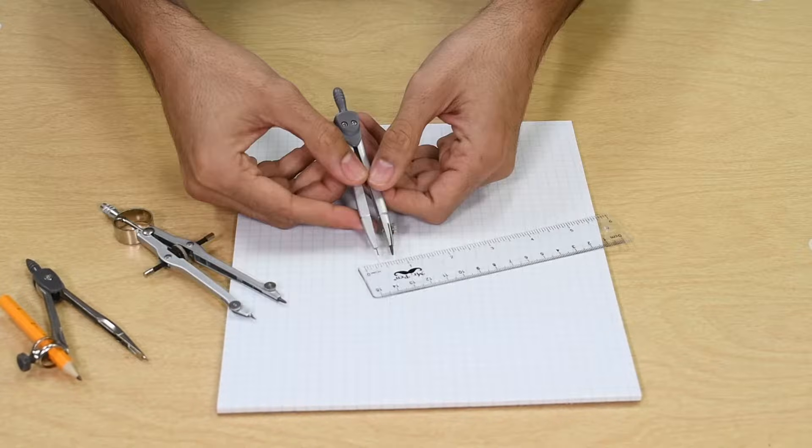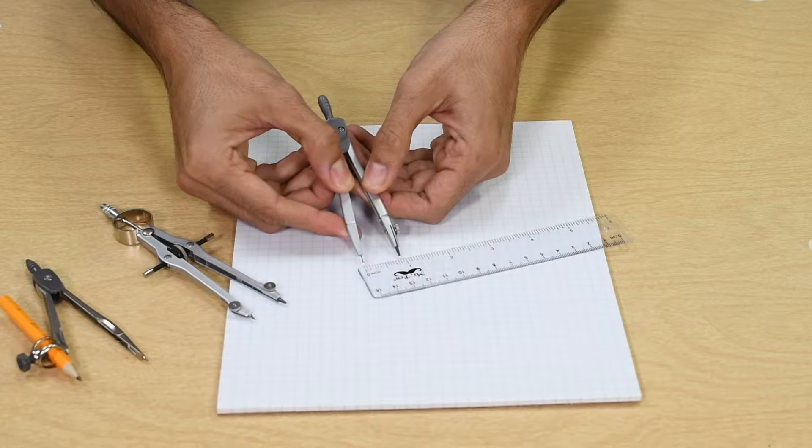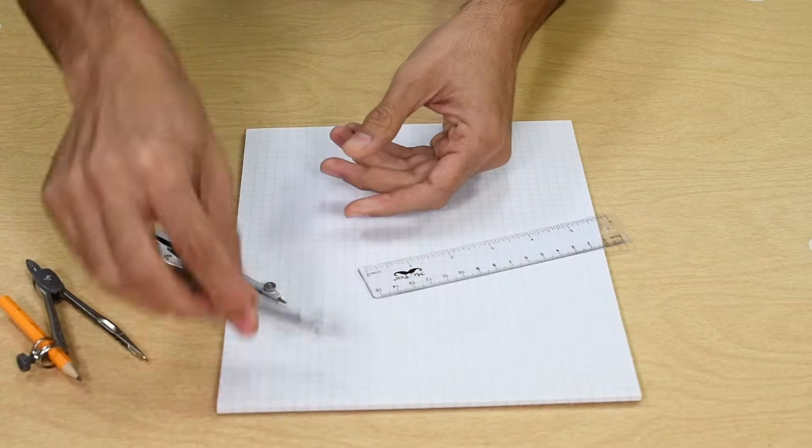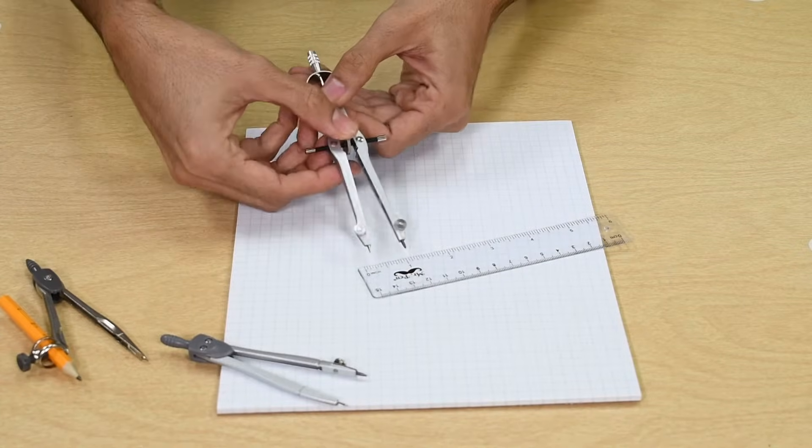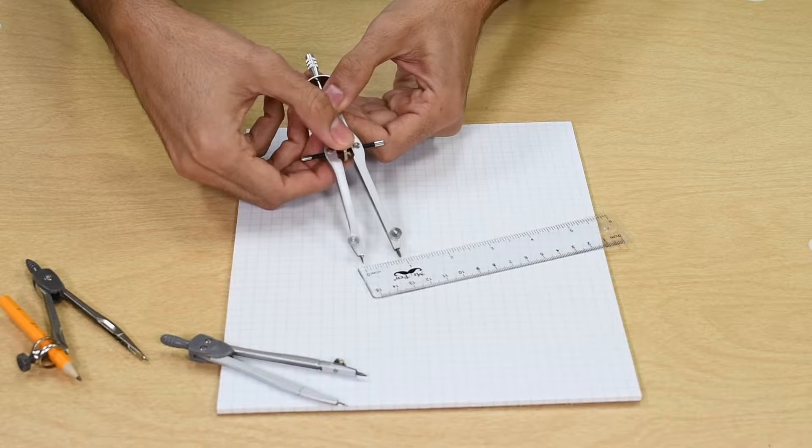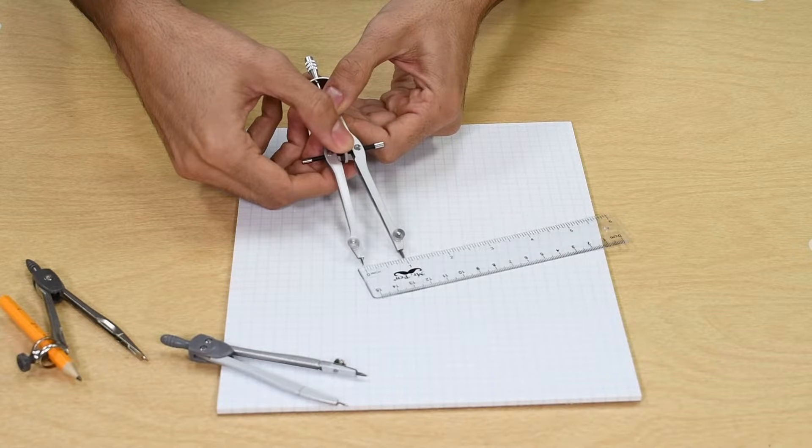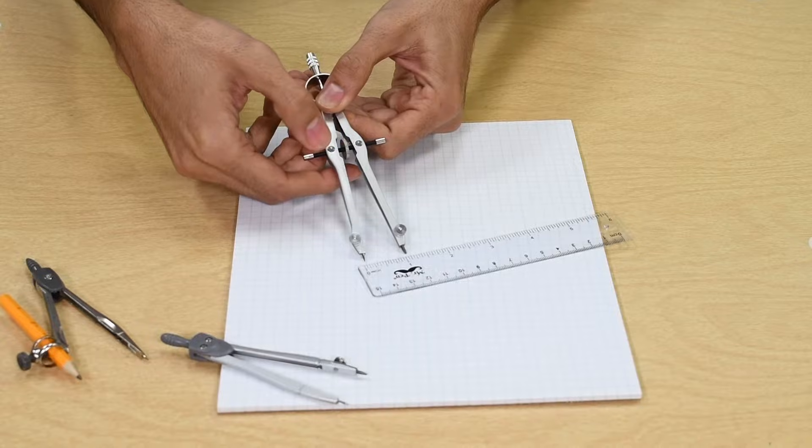Then we open the compass legs to our desired radius. Notice this is the radius of the circle and not the diameter. For the bow compass you can use the center wheel to adjust the legs. For example, in this case, 1 inch radius.